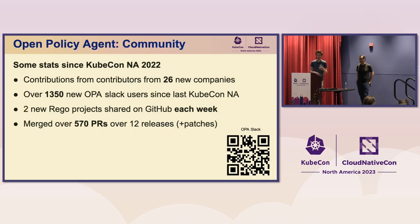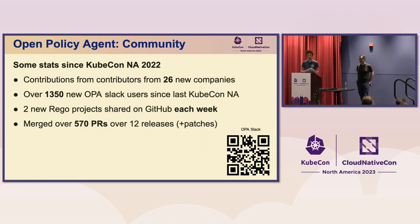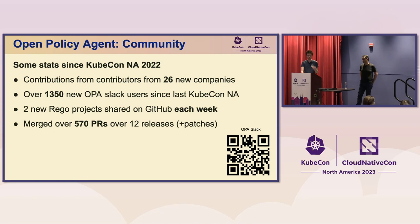A quick update on community milestones and stats from last year's KubeCon North America: we've had contributions from 26 new contributors from 26 new companies. Over 1,300 people have joined the OPA Slack, which is our main channel for community support and discussion. On average, two new repos are shared on GitHub each week containing Rego source code. And in the OPA core project, we've merged over 570 pull requests — not including PRs merged to other projects in the OPA community.